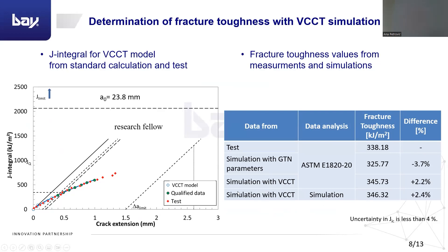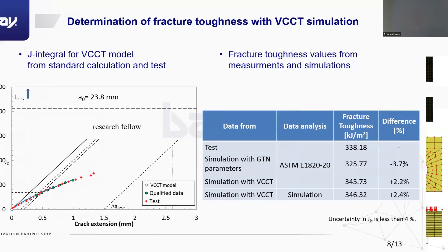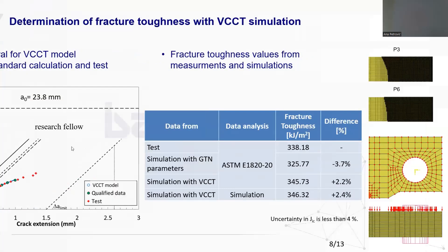As you can see, the simulation with the VCCT method, where the results were coming directly from the simulation, the difference was only 2.4 percent. So, as this method was usable for the normal CT, we also made miniaturized CT specimens. It can be seen from this picture that they are quite small.